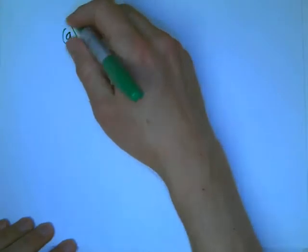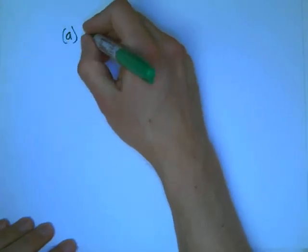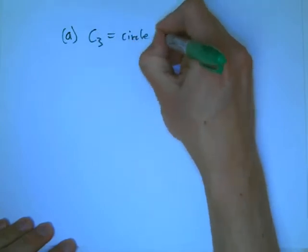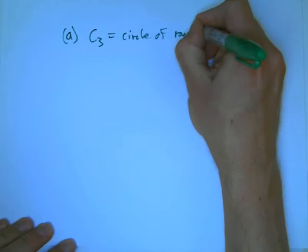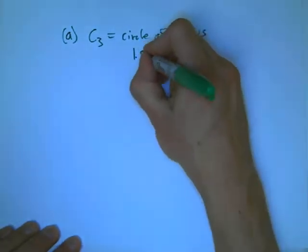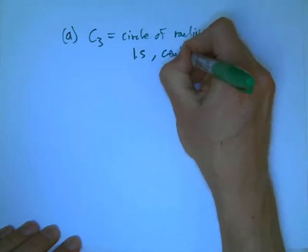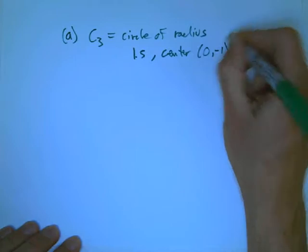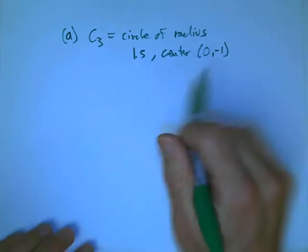So for part a, we want, let's say, C3 is the circle of radius, I don't know if I'll do every one of these, of radius 1.5, center (0, -1), with the usual outward orientation.